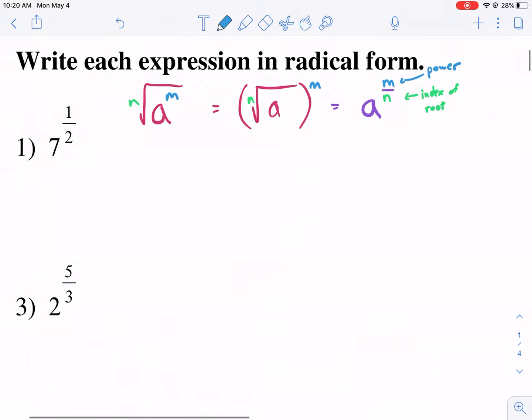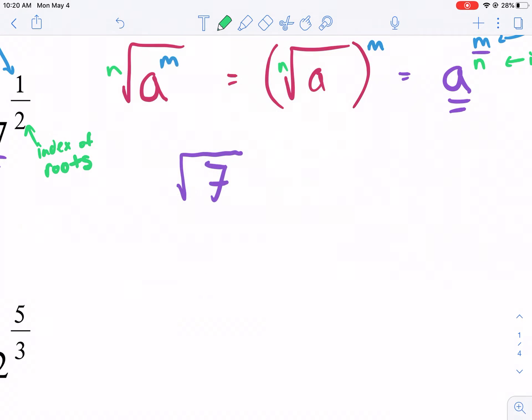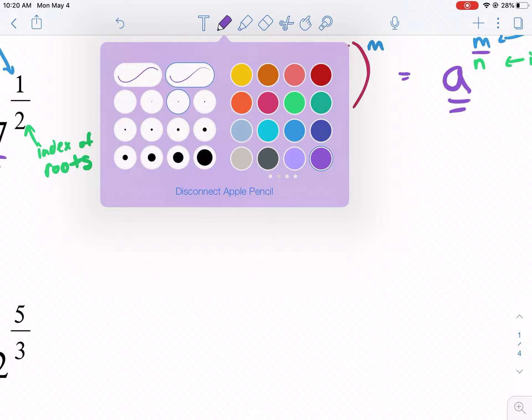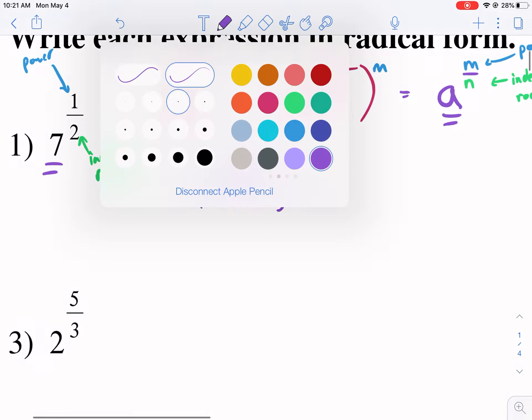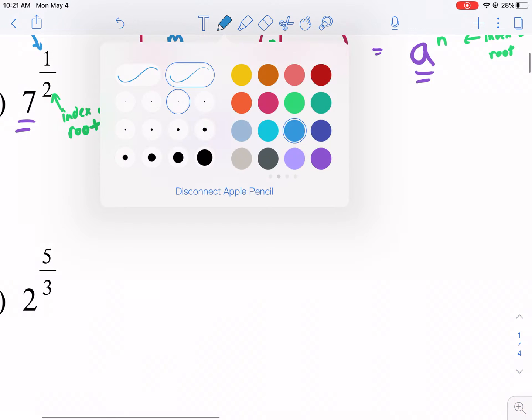So if we want to go in reverse, it's easy to do. We just have to recognize that the top is the power, and the bottom is the index of the root. So what we're going to do is we're going to copy the base just like we had here. We have seven. And now we're going backwards. We're going from the exponent to the radical. So I need to put this in a radical. And now what do I put for my index? I can put two for my index. And then I need to raise this whole thing to the power of one. Now you're going to notice a couple things here.